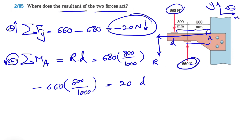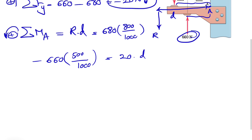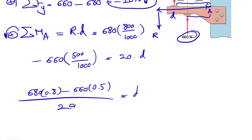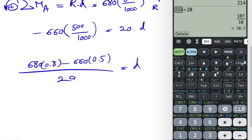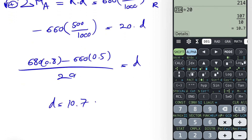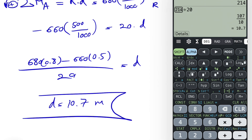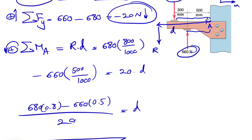So what the question is asking — where does the resultant act — gives us: D = (680 × 0.8 − 660 × 0.5) / 20. Let's pull up our calculator: 680 times 0.8 minus 660 times 0.5 equals 240, divided by 20. So we find D = 12 meters. Wait — that gives us 12, but working it out: the result shown is D = 10.7 meters, to the left side of R. So the location of R is at D = 10.7 meters.